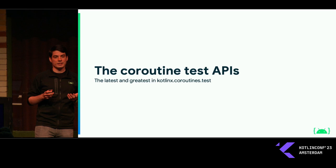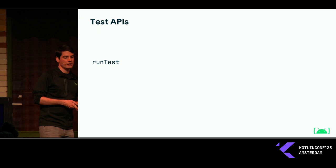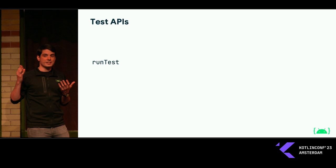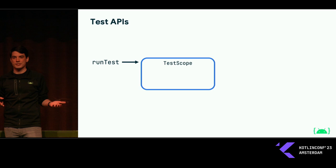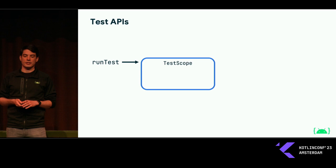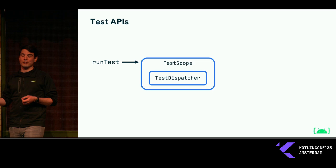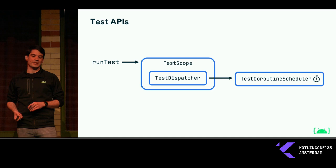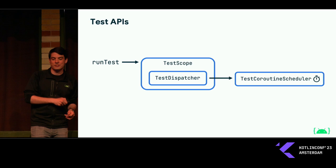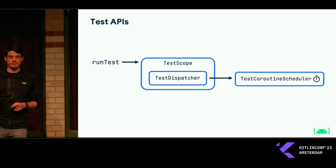Before we examine those failures, we need to learn about the available coroutine testing APIs. All of this starts with runTest, which we've already seen — it's a special coroutine builder which lets us create coroutines for testing purposes. Because all coroutines need to run in a coroutine scope, runTest uses a TestScope to run that test coroutine. What TestScope does is always use a TestDispatcher inside it. And that will depend on a TestCoroutineScheduler, which is really the core of the testing library and where most of the implementation actually happens.